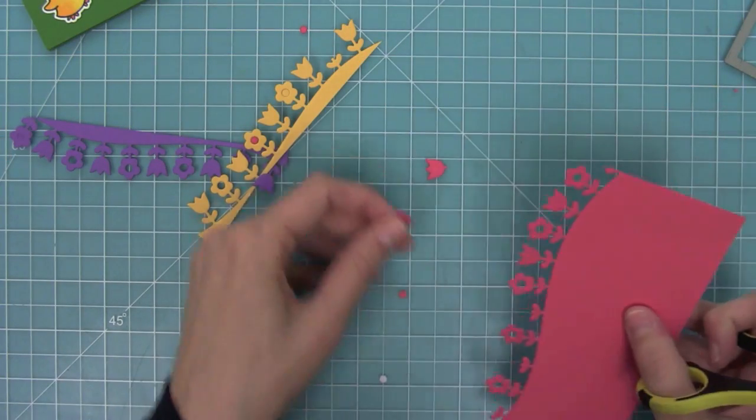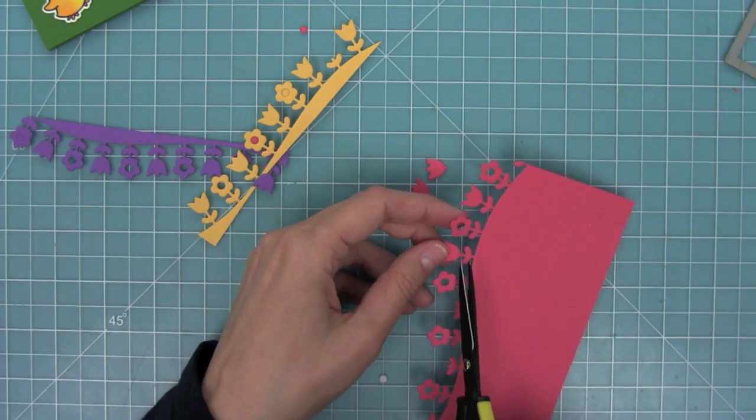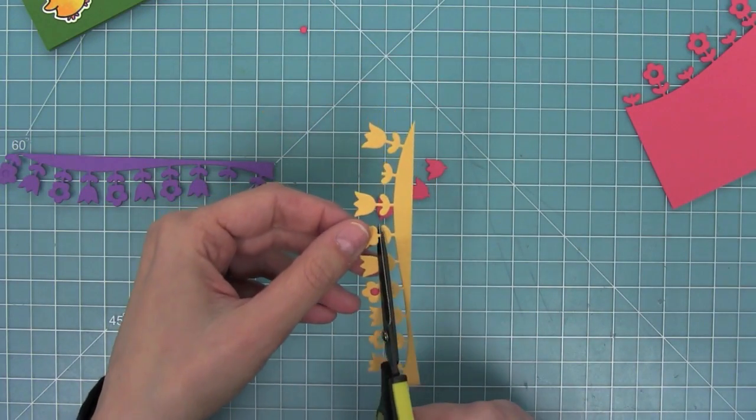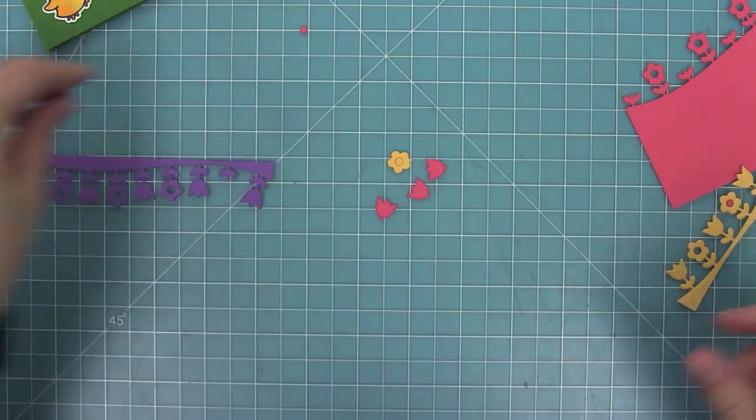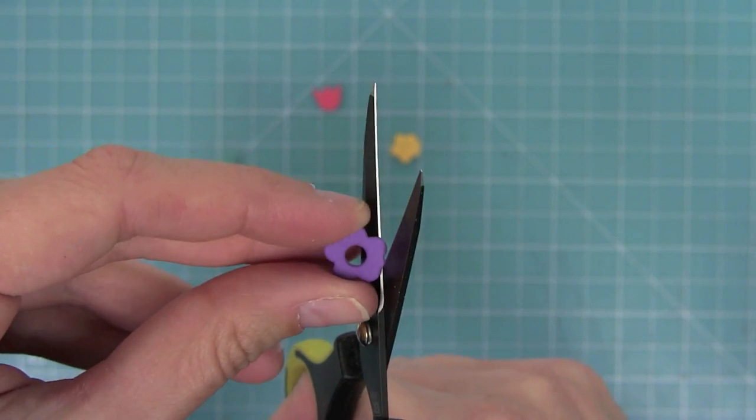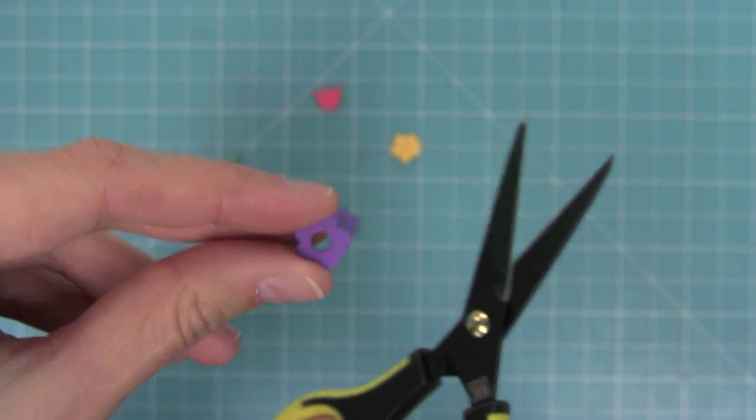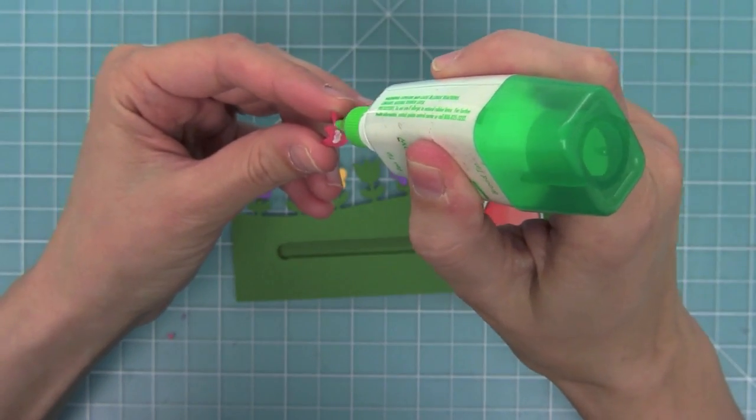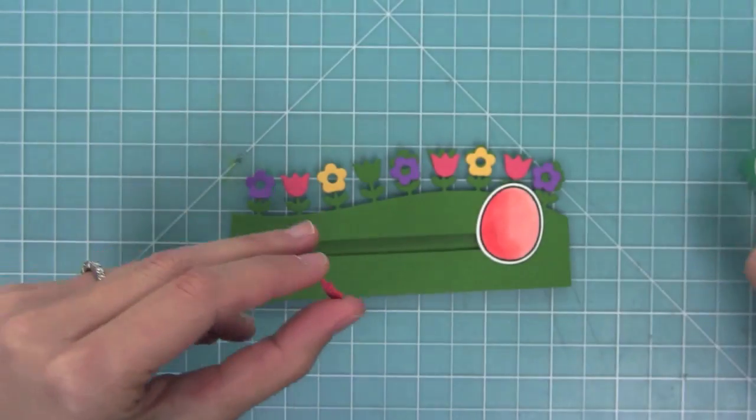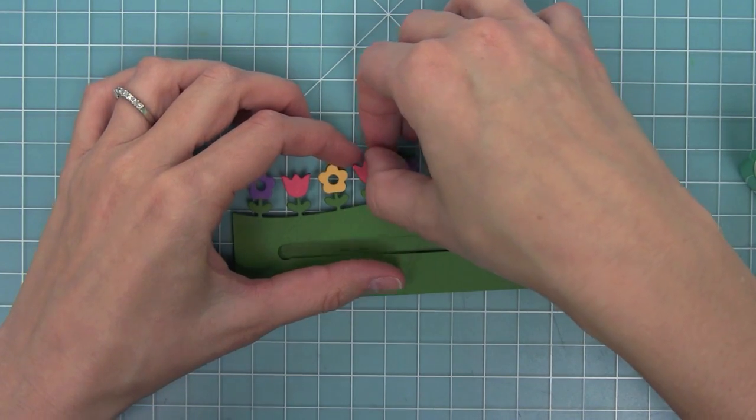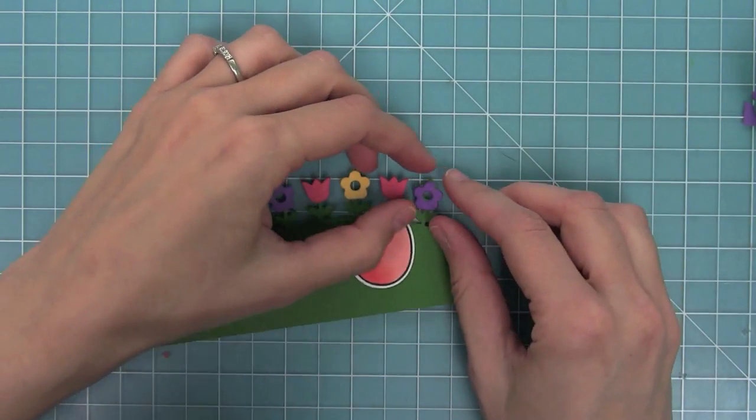I'm just going to go ahead and cut all the flowers that I need off, just like that, out of all of the colors. Then I can go and just trim off that kind of little nub that's right on the end there. Now I can have multicolored flowers on my flower border. I'm just using a little bit of liquid glue and just laying that right on top. This actually goes by super quickly because you just die cut, cut, and glue.